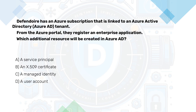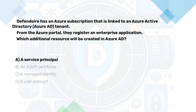We have an Azure subscription that is linked to an Azure Active Directory tenant. From the Azure portal we register an enterprise application. Which additional resource will be created in Azure Active Directory? A. A Service Principal. B. An X.509 Certificate. C. A Managed Identity. D. A User Account. Now pause the video, think, then continue. When an enterprise application is registered in Azure AD, the primary resource created is a service principal within the Azure AD tenant.